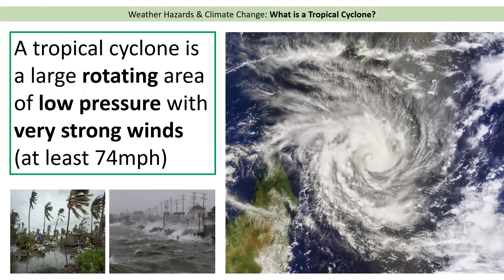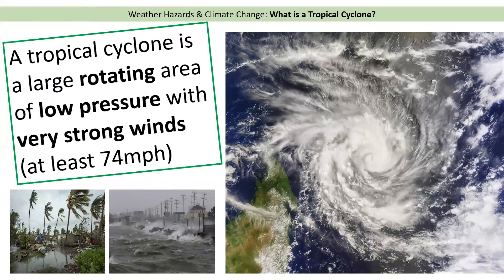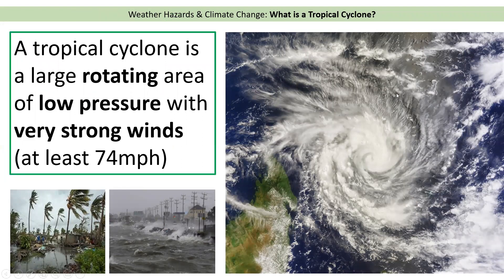So first of all, what is a tropical cyclone? On the right hand side we can see a satellite image of a tropical cyclone — an image from space showing a big rotating or spinning lump of clouds. If you were on the ground it would look a little bit more like the pictures shown here. So a tropical cyclone is a large rotating — which means spinning — area of low pressure with very strong winds. The winds have to be at least 74 miles an hour for it to be classed as a tropical cyclone.